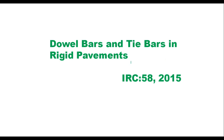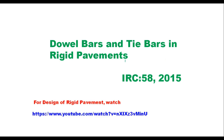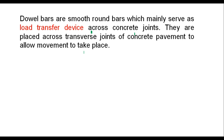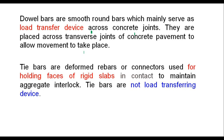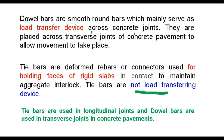Hello friends. We discussed design of rigid pavements in another video. Here we are discussing design of dowel bars and tie bars in a concrete pavement. Dowel bars are smooth round bars which mainly serve as load transfer devices in a concrete pavement. Tie bars are deformed bars or connectors used for holding faces of rigid slabs in contact to maintain aggregate interlock. Tie bars are not load transferring devices; tie bars are used in longitudinal joints whereas dowel bars are used in transverse joints.